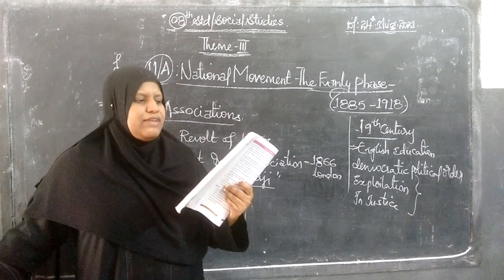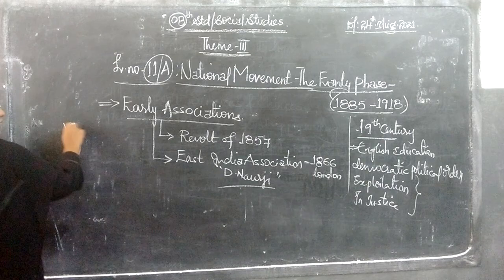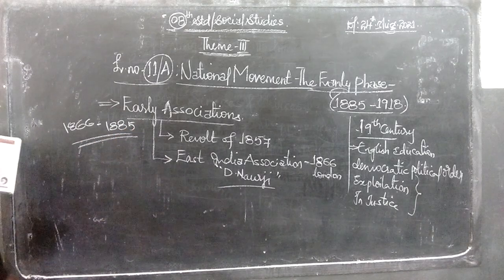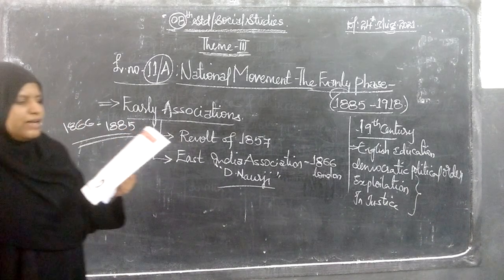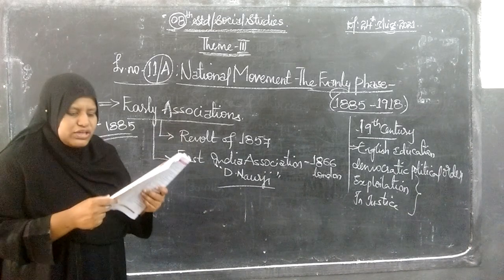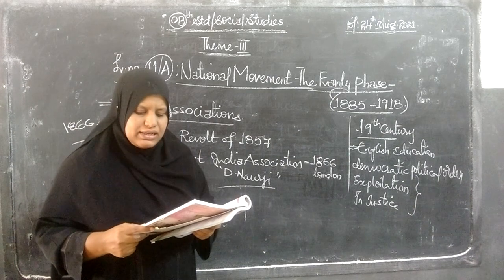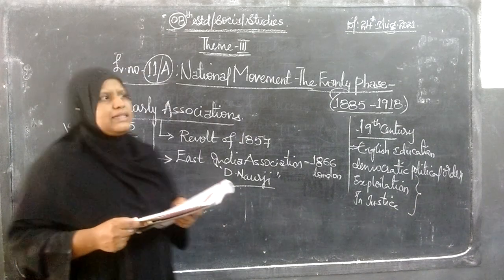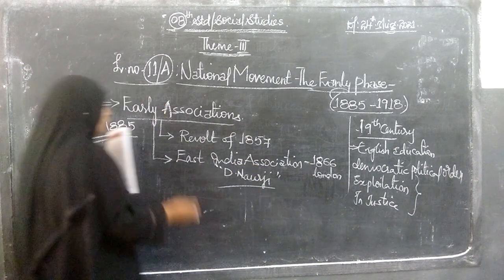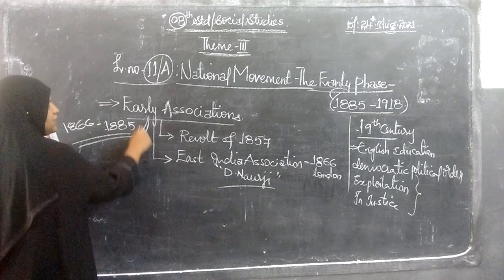During 1866 to 1885, various kinds of associations were formed. The first association was the East India Association, formed by Dadabhai Naoroji in London. From 1866 to 1885, this was the period of early associations.